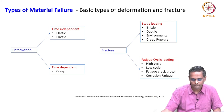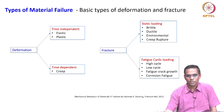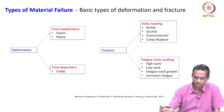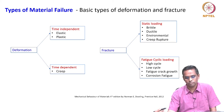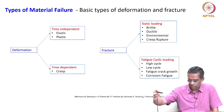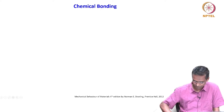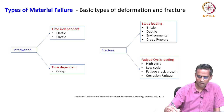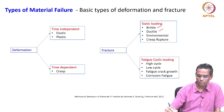If you take fracture, you can look at it in two broad categories: whether fracture occurs under static loading or fracture occurs under cyclic loading. Under static loading, the fracture or failure can be brittle in nature, ductile in nature, or it could be environmental or creep fracture.